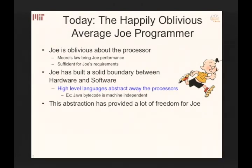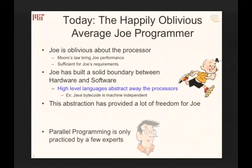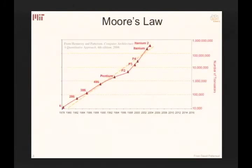Programmers were able to build a solid boundary between hardware and software. Something like Java abstracts out everything about hardware — you don't even know where your program is going to run. This abstraction provided a lot of freedom for the average programmer, letting them worry about features rather than performance. Meanwhile, only a tiny fraction — less than 1% — in research labs actually cared about performance.